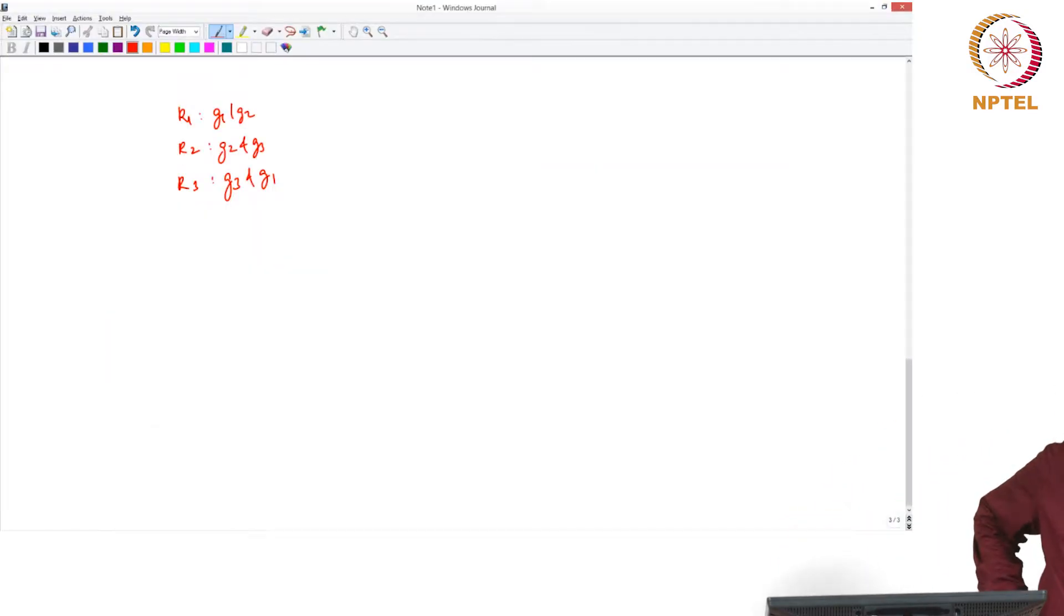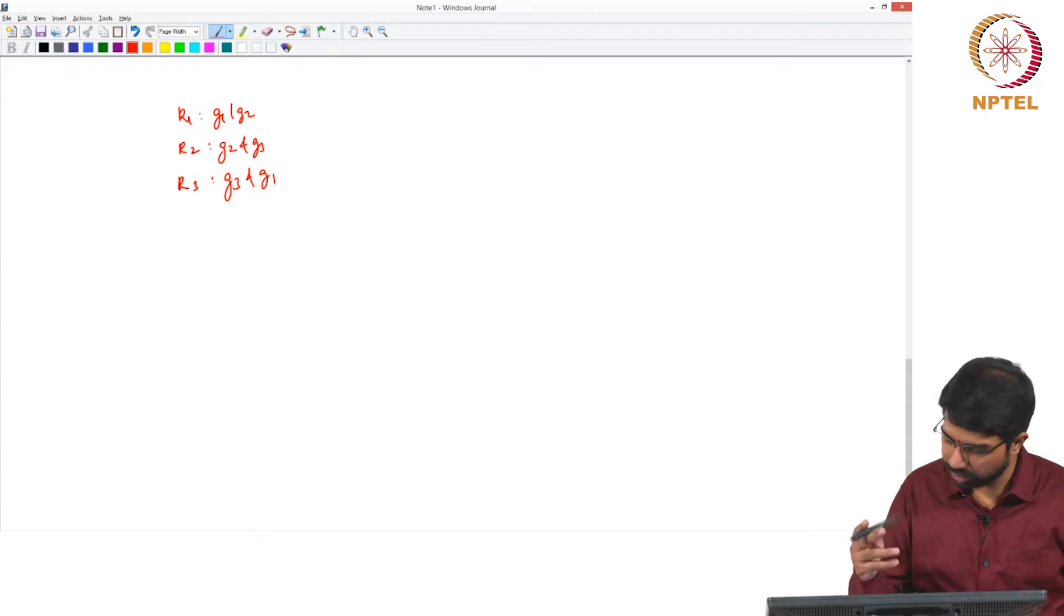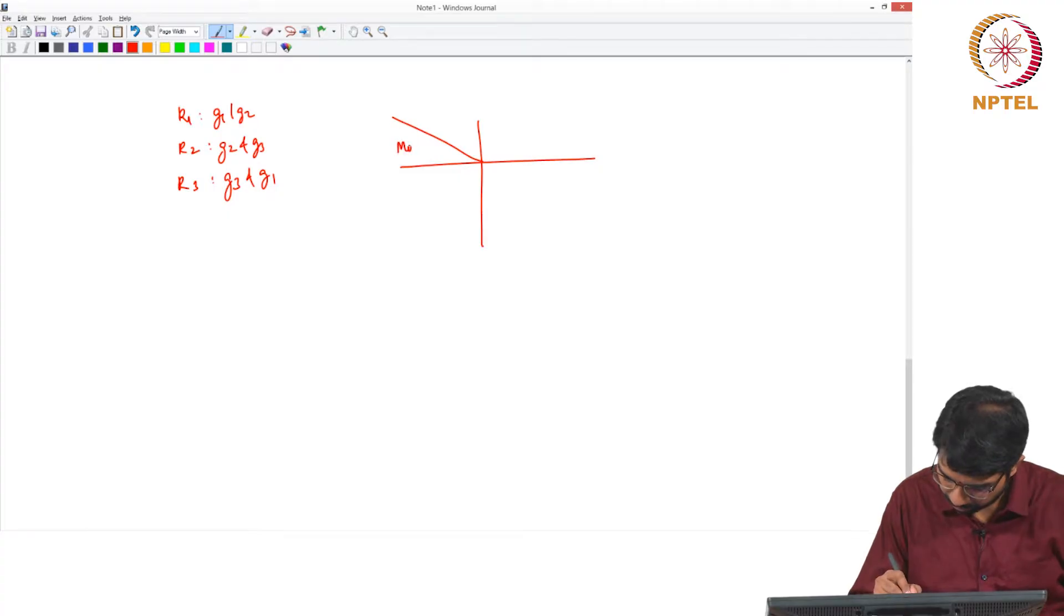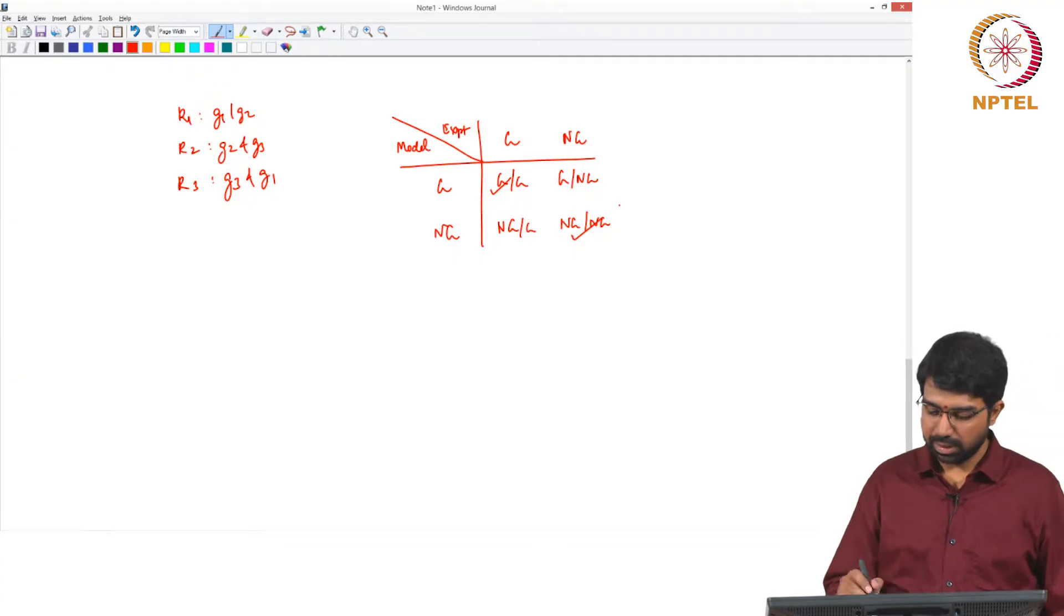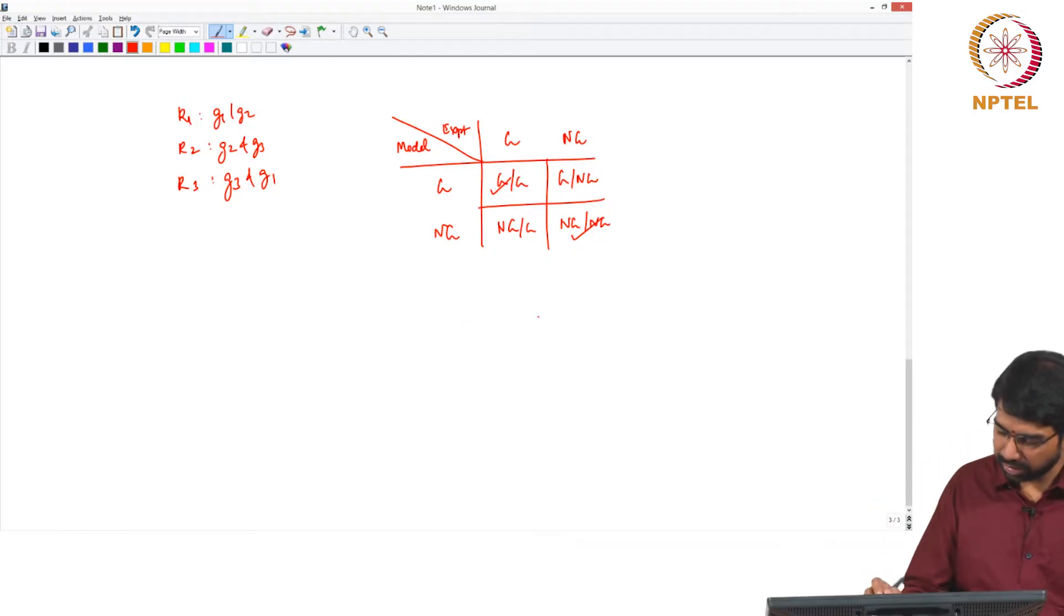There are different kinds of prediction errors that can happen. Let's say this is the model and this is experiment. You can have growth, no growth, growth, no growth. These two are good - true positives and true negatives. The other two are a problem - false positives and false negatives. Let us first consider the NGG scenario which means model no growth, experiment there is growth. What could be the reasons underlying this?